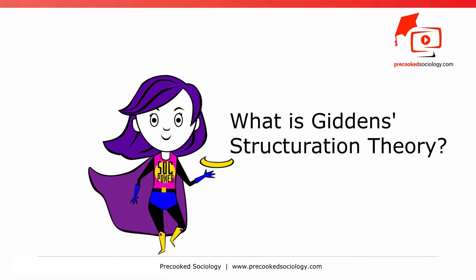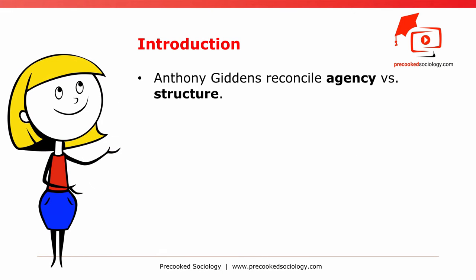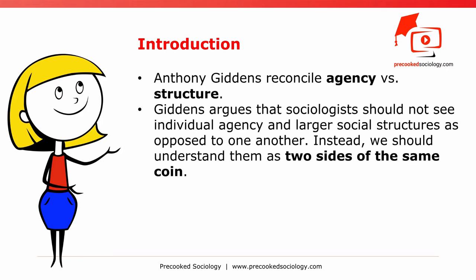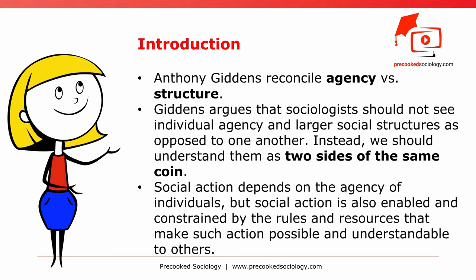What is structuration theory? Introduction. Anthony Giddens sought to reconcile agency versus structure. In his theory of structuration, Giddens argues that sociologists should not see individual agency and larger social structures as opposed to one another. Instead, we should understand them as two sides of the same coin. Social action depends on the agency of individuals, but is also enabled and constrained by the rules and resources that make such action possible and understandable to others.